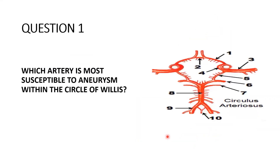The first question: which artery is most susceptible to aneurysm within the Circle of Willis? There's a diagram of the Circle of Willis here. Which artery is most susceptible to aneurysm within the Circle of Willis?